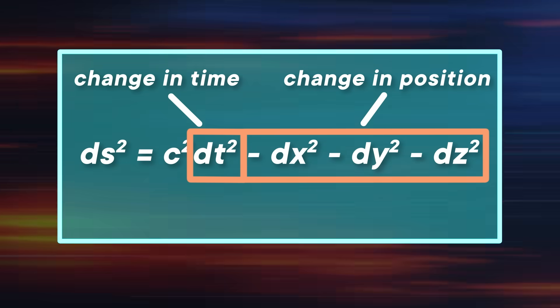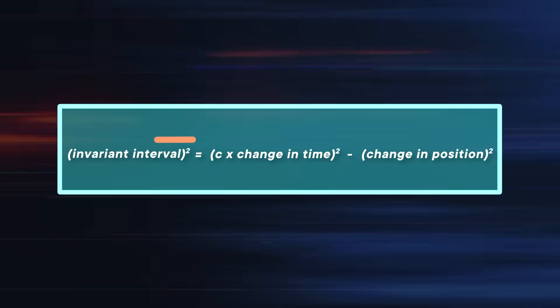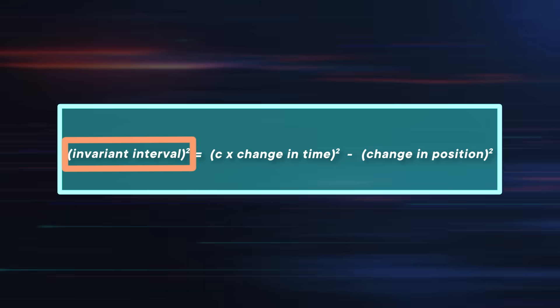Let me simplify the equation. Physicists refer to DS as the invariant interval, because it's always the same no matter what reference frame you're in. In other words, if two observers are observing the same object, they may disagree on how much it moves through space or how long it takes to do so. But if they plug in their values for DX, DY, DZ, and DT and solve it, they will always agree on DS squared. In the laws of relativity, the invariant interval is not relative.